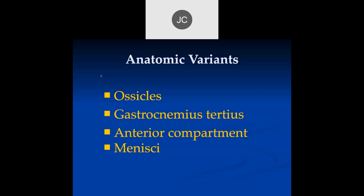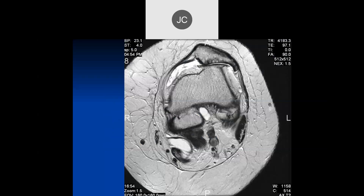Let's continue with MR of the knee. We're talking now about anatomic variance. We'll talk about ossicles around the knee, some muscle variance in the anterior compartment, and some of the menisci.